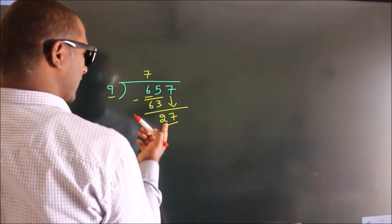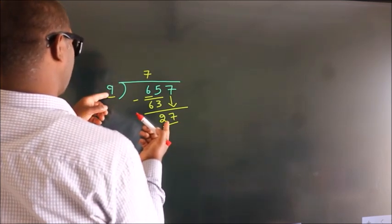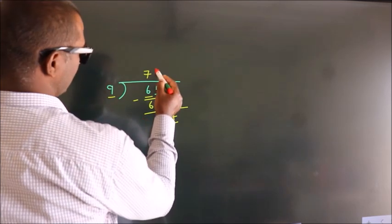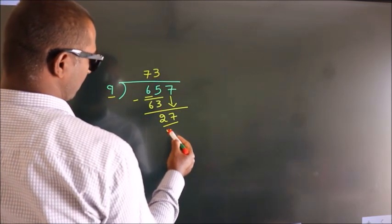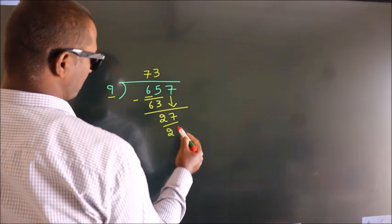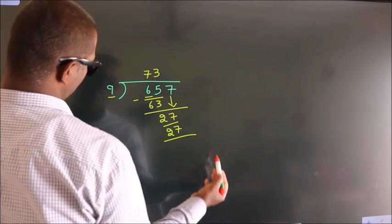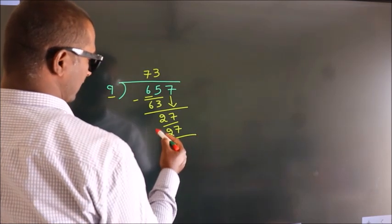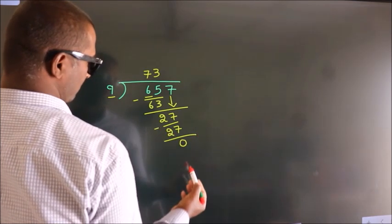When do we get 27 in the 9 times table? 9 threes are 27. Now we subtract, and we get 0.